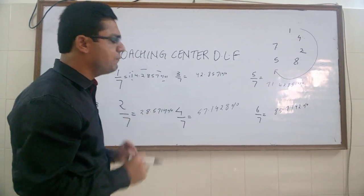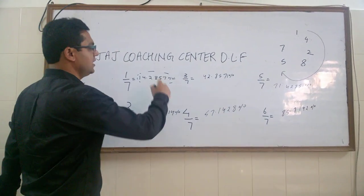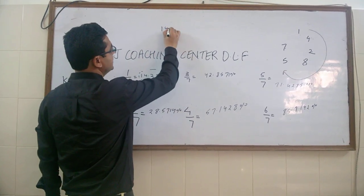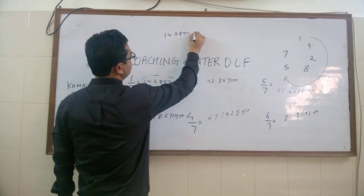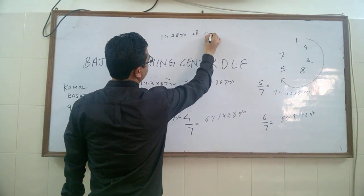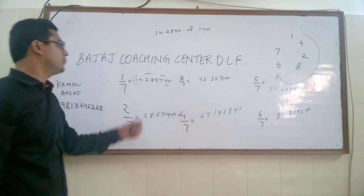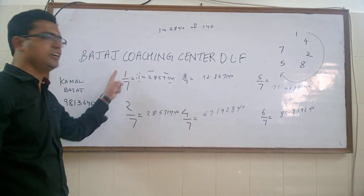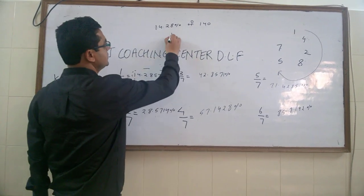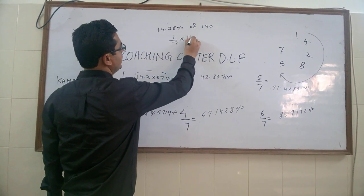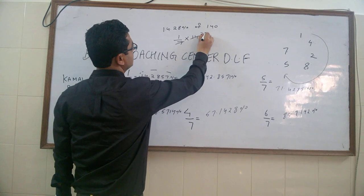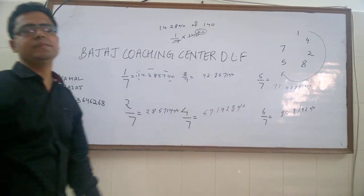Where can these fractions be used? If the question comes from DI calculation: 14.28 percent of 140. If you remember 14.28 percent, its value is one by seven. One by seven of 140 gives approximately 20.